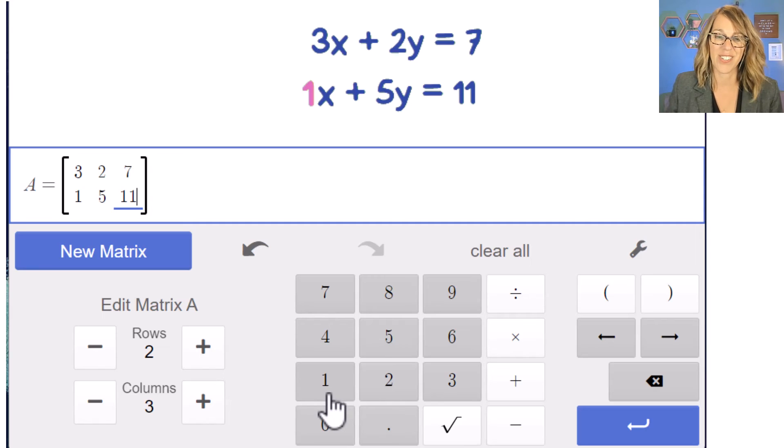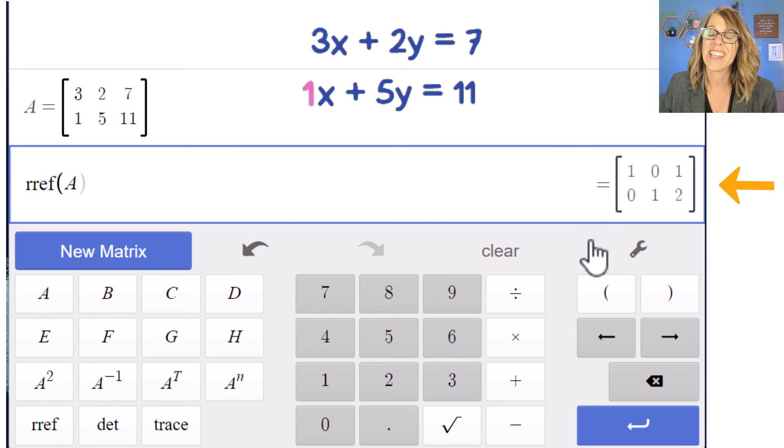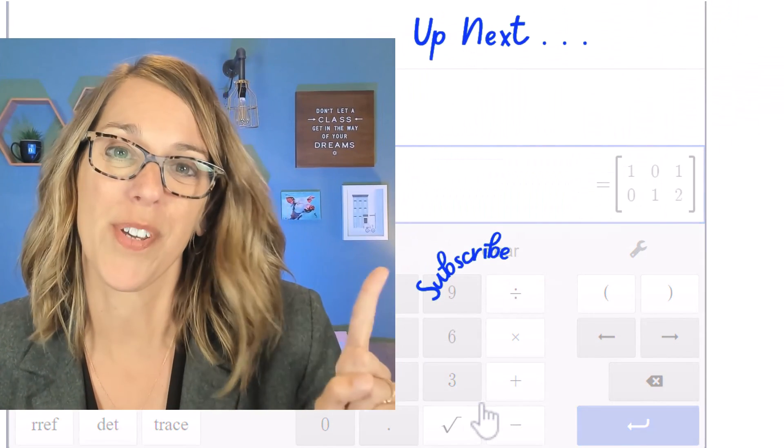I'm going to hit enter to get to another line and I can do row reduced echelon form. So I'm going to click onto that one. I want to apply this to my matrix A and here is my row reduced echelon form. This tells me that X, one X is equal to one and one Y is equal to two. I've got more on Desmos for you here.